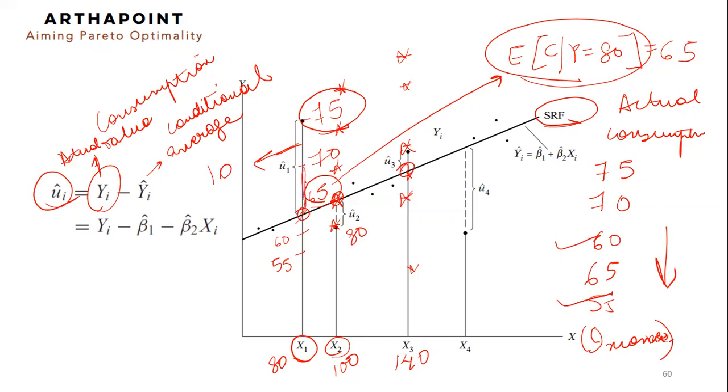For this individual, the gap is 5. For this individual, the gap is minus 5. For this individual, the gap is minus 10. Again, very important concept.